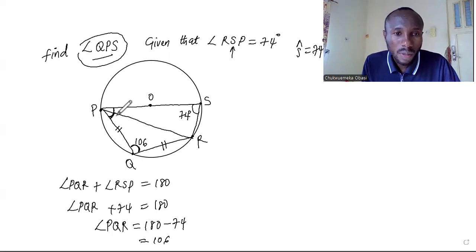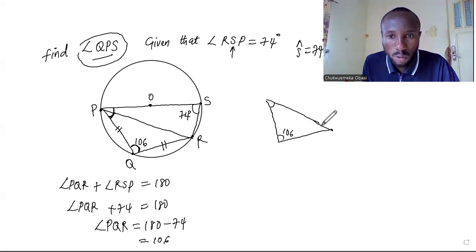So let me bring out that isosceles triangle there so that we can quickly resolve that one very fast and move on. Of course we know this is just 106, and we don't know this angle here and we also don't know this angle here. But we know that this is an isosceles triangle, and in an isosceles triangle your base angles are always equal. So if here is X degrees, here also needs to be X degrees. And remember the sum of angles in a triangle is 180 degrees.